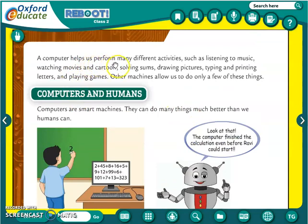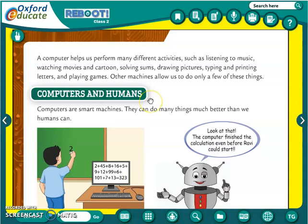A computer helps us perform many different activities such as listening to music, watching movies and cartoons, solving sums, drawing pictures, typing and printing letters, and playing games. Other machines allow us to do only a few of these things. So many activities we can do on a computer, but other machines allow us to do very few things.